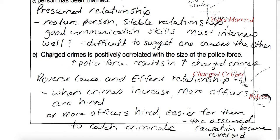The last one: charged crimes is positively correlated with the size of the police force. The more police we have, the more charged crimes there are — I guess there are a lot more police and that's going to result in a lot more charges. This could be a reverse cause and effect. If we did this the exact opposite way, we could say when crimes increase, more officers are hired. That seems to make more sense — this could be a reverse cause and effect relationship where we actually had the two variables backwards.